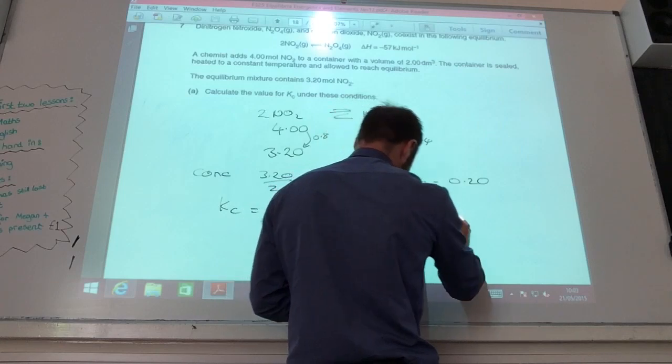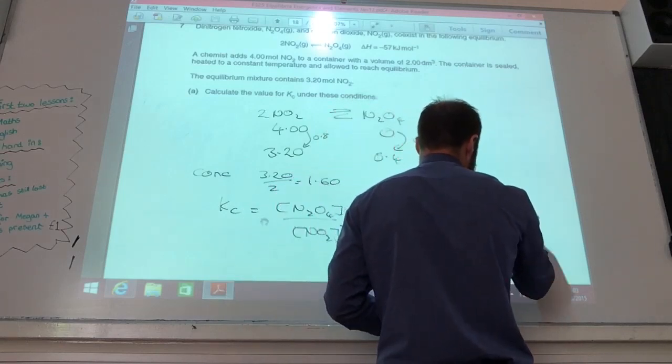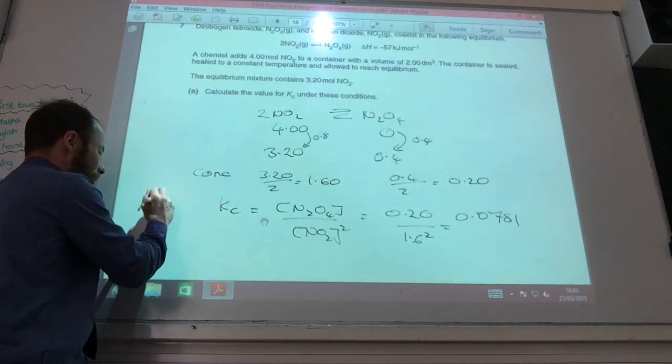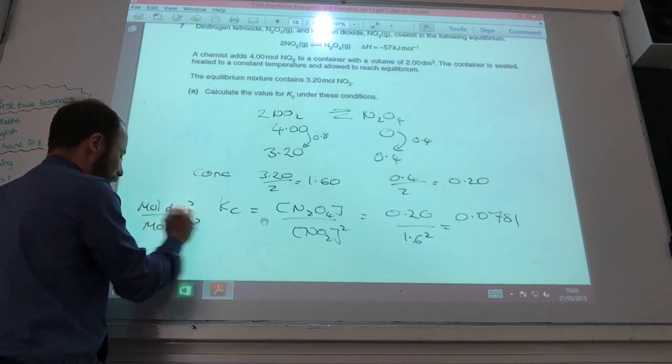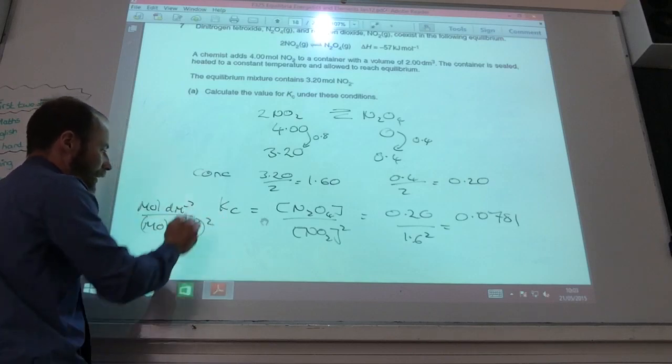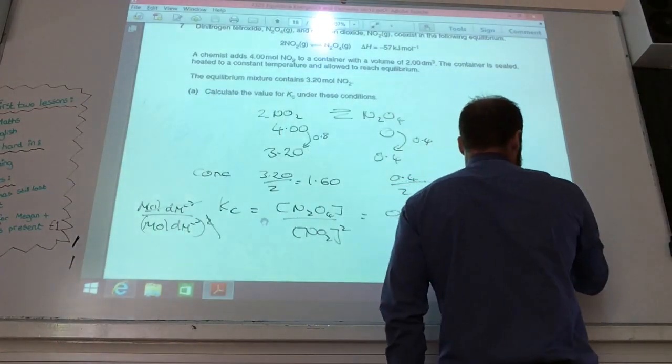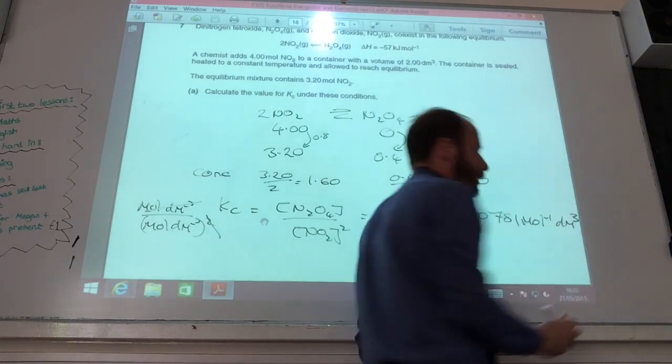You then do Kc is going to equal concentration of N2O4 over concentration of NO2 squared. So it's 0.20 over 1.6 squared. And if you do that, you get 0.0781. Have a look at units. Concentration, moles per decimetre cubed. Moles per decimetre cubed, that squared. That cancels with that squared, so it's moles to the minus 1 decimetres cubed.